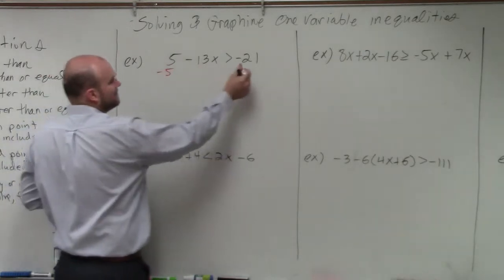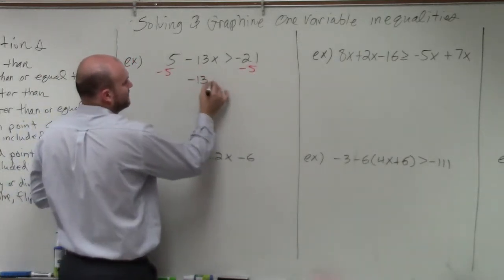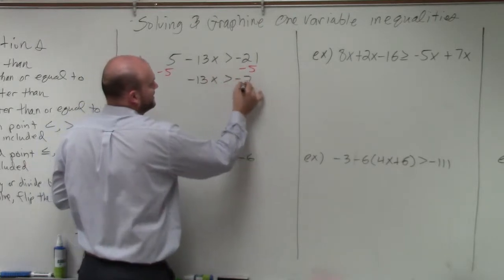So I'll subtract 5 on both sides. That leaves me with negative 13x is greater than negative 26.